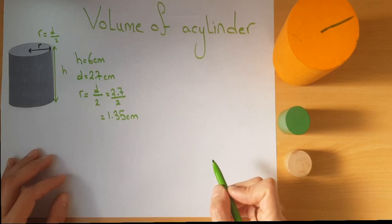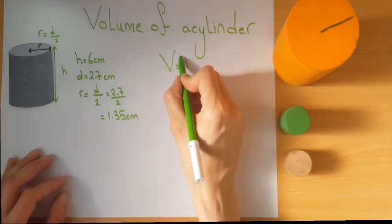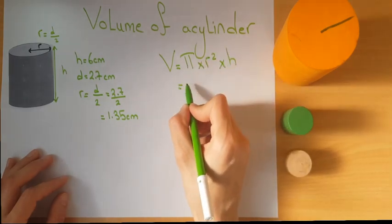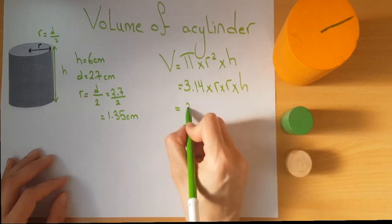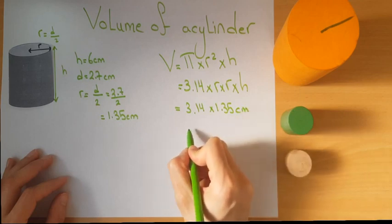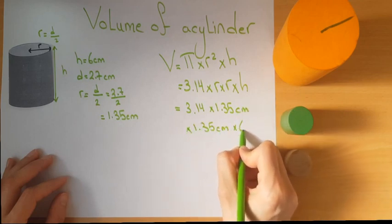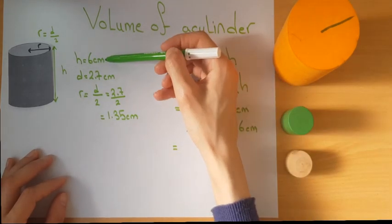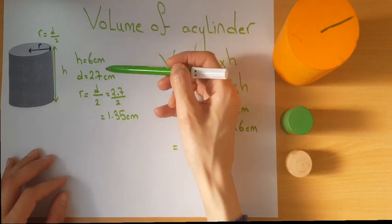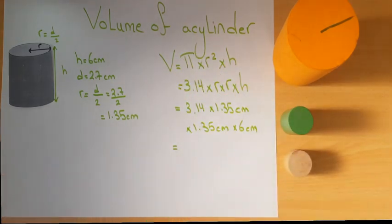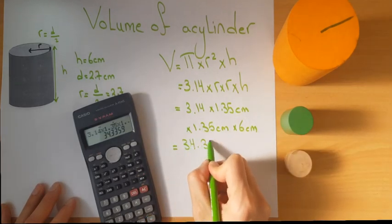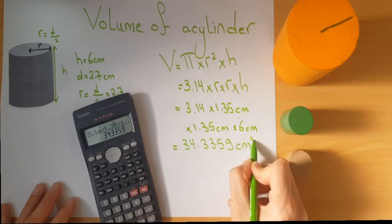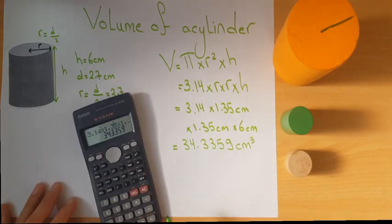The formula for the volume of a cylinder is pi times r squared times the height — or 3.14 times r times r times height. Note that the height and radius must be in the same unit. Using the calculator with radius 1.35 cm and height 6 cm, the volume of the cylinder is 34.34 centimeters cubed.